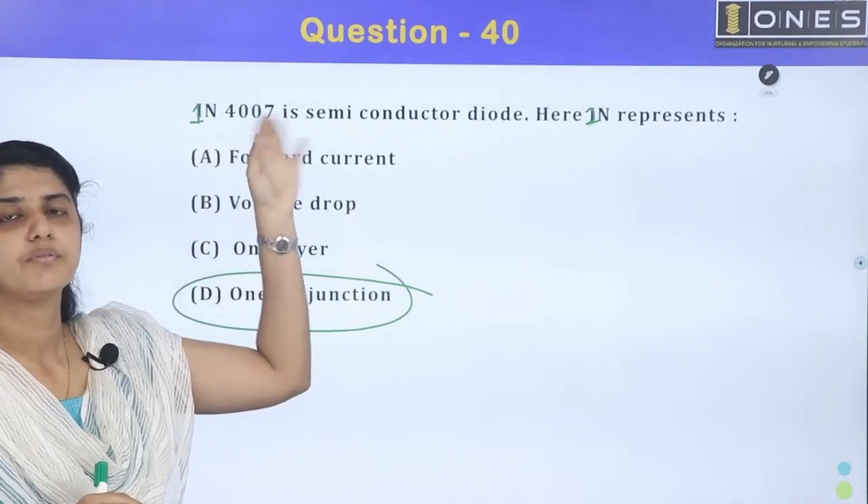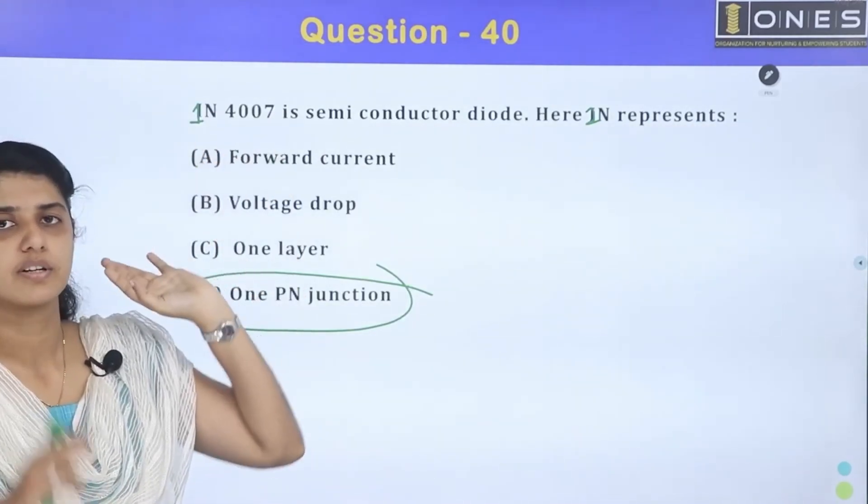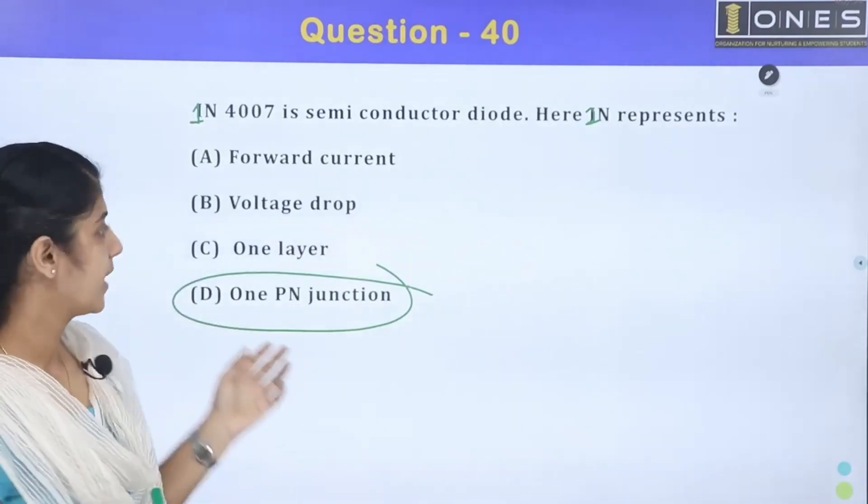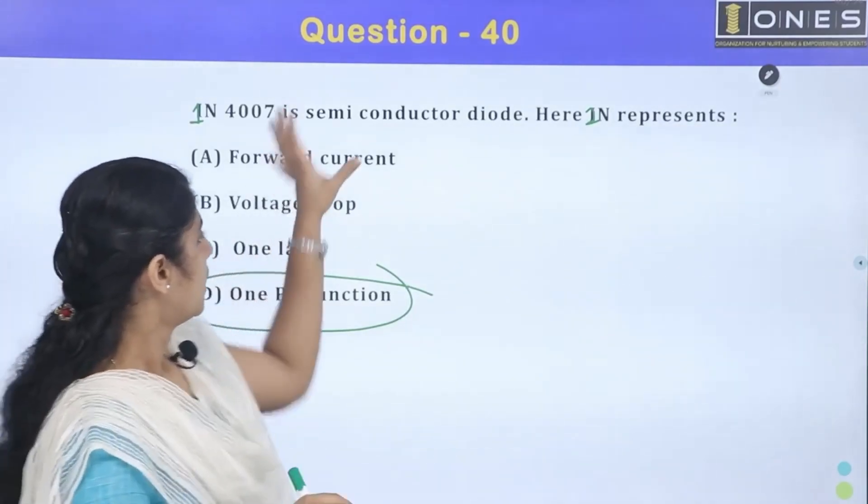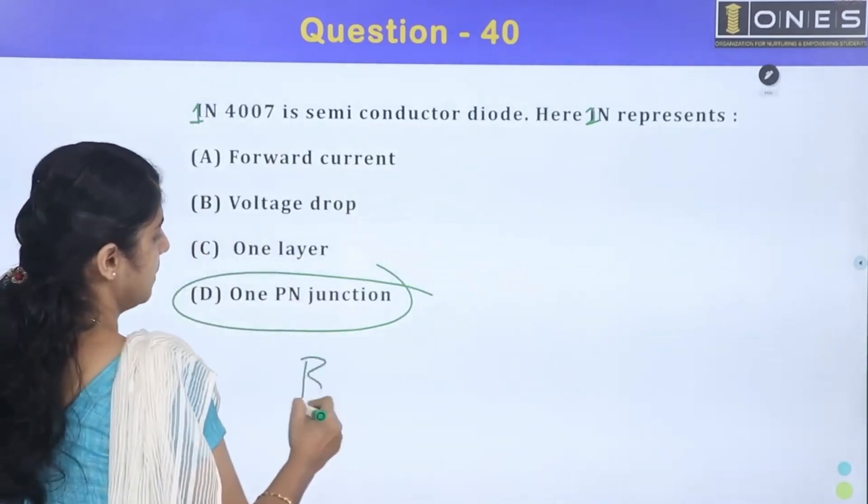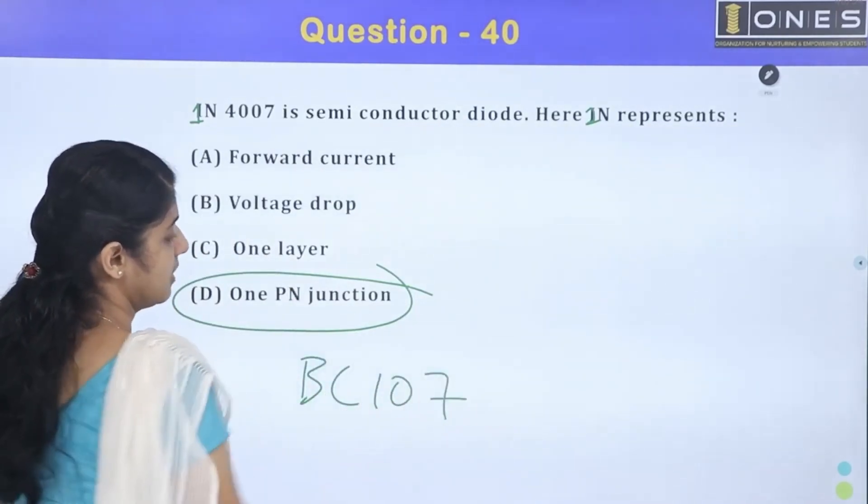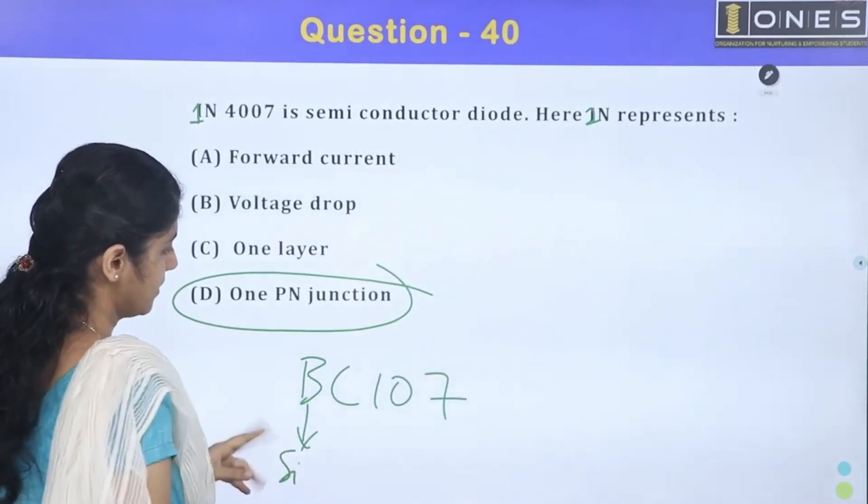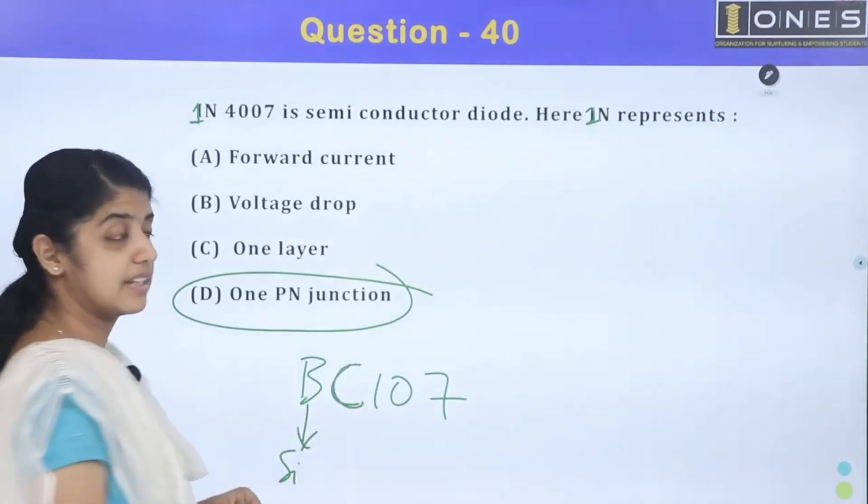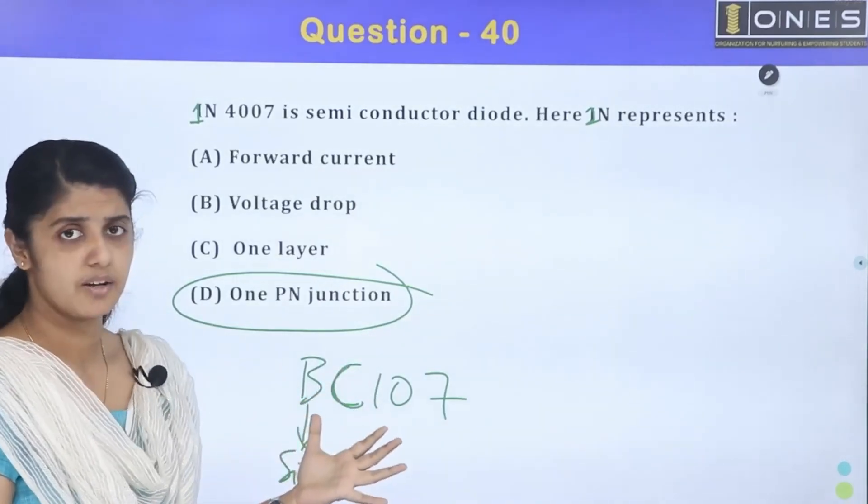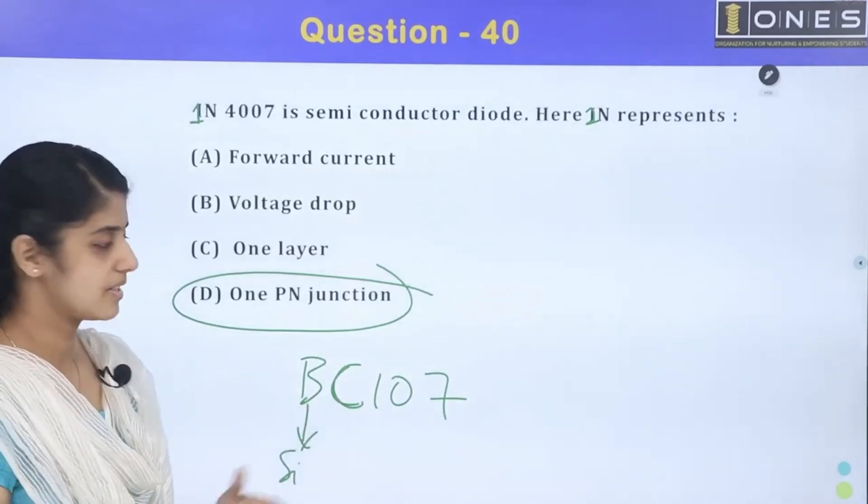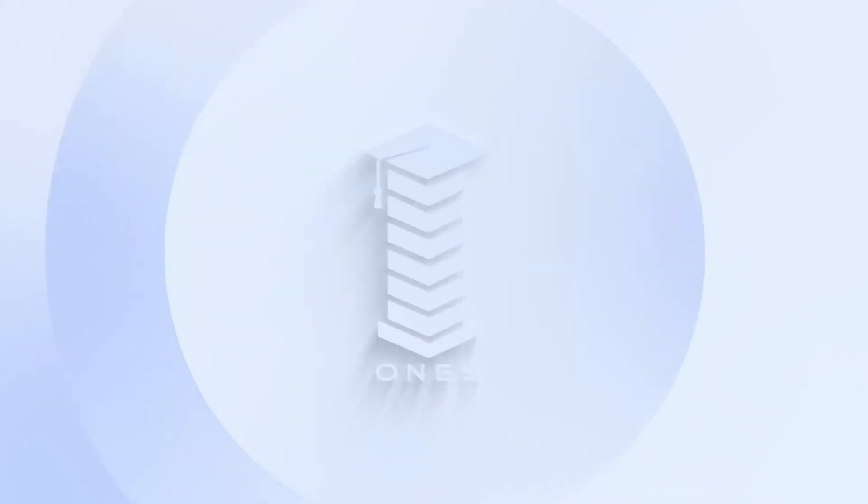Now, 2N diodes - when a diode starts with 2N, it represents a 2-junction arrangement. For example, BC-107 which starts with 2N indicates two junctions, which is a transistor, not a diode. The frequency range discussion involves audio frequency and other ranges.